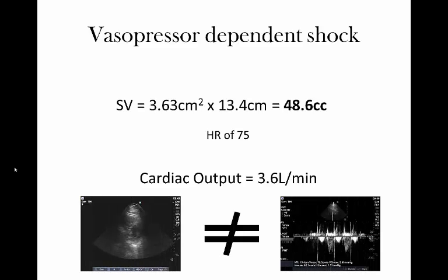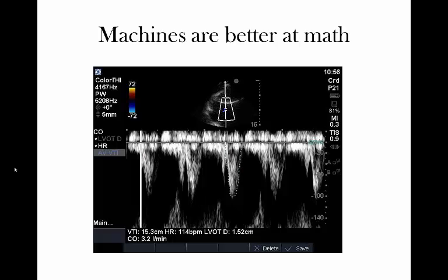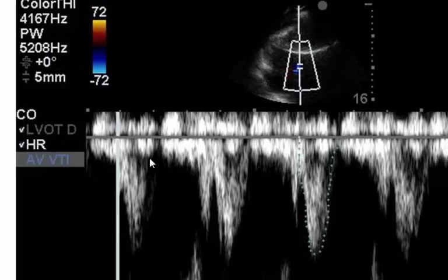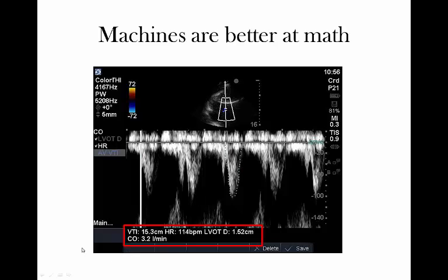Once again, we can agree that ejection fraction or left ventricular function, as shown in this case, doesn't really equate with actual stroke volume. And before you say this is all nice and good but you're never going to do the math — most machines, including the Sonocyte machine depicted in this tutorial, will do the math for you using a cardiac output setting. If you punch in the diameter and the heart rate and measure the VTI, it'll spit out all the numbers for you, which is quite handy.